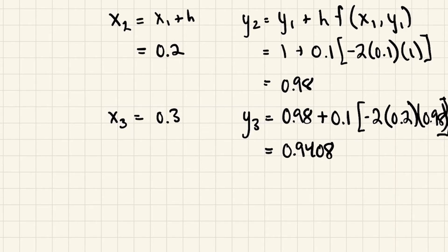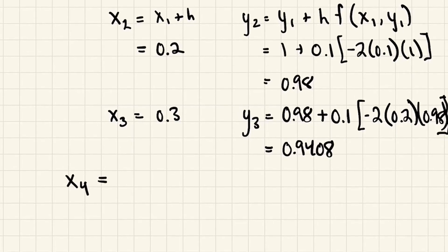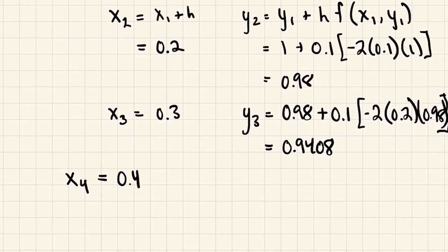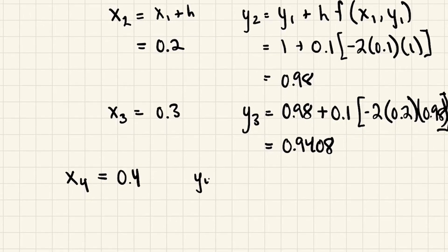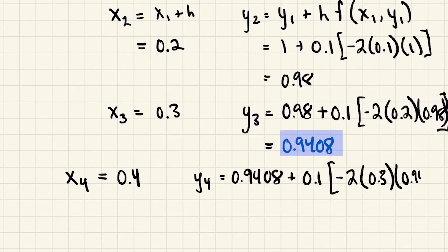Let's move over a little bit so we have some more room to work on the right. So x₄ will be 0.4. And y₄ is y₃, 0.9408, plus h, which is 0.1 times f of the previous x and y values. So that would be -2 times 0.3 and 0.9408. So we get that y₄ is 0.884352.